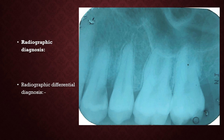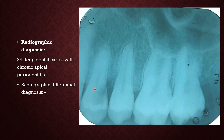Since we have seen that there is widening of PDL space, there is loss of lamina dura at the apex, and there is a very well-defined radiolucency which is dental caries involving the pulp, they all correlate. The radiographic diagnosis is tooth number 2-4: deep dental caries with chronic periapical periodontitis. Always start with the tooth number, then the finding, followed by the diagnosis.